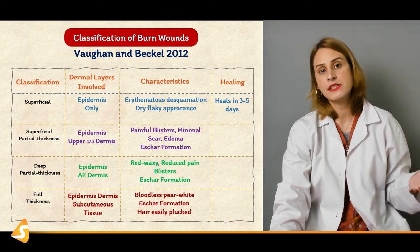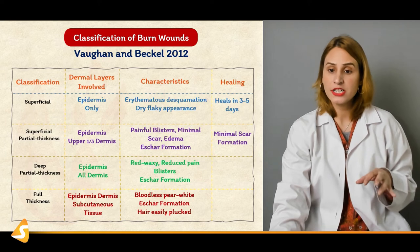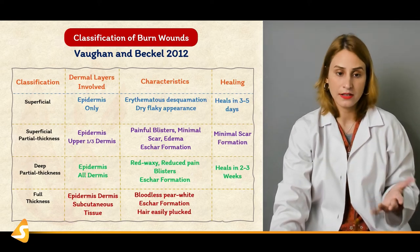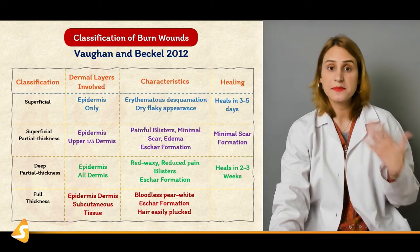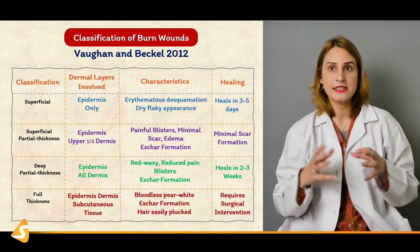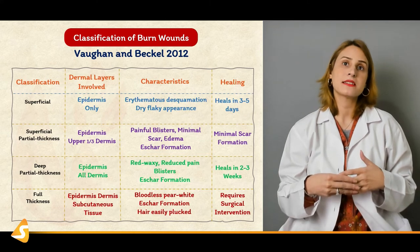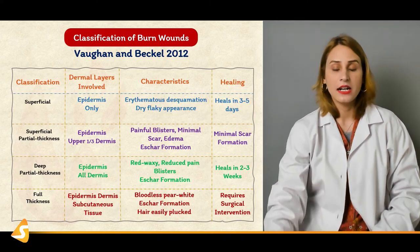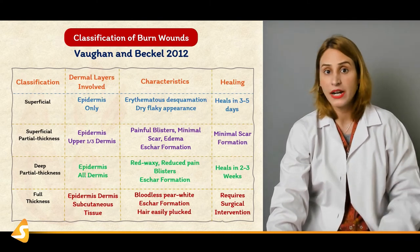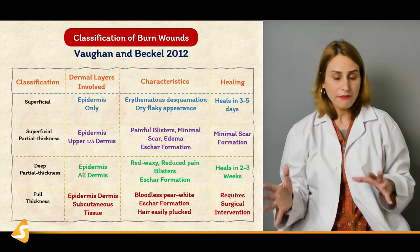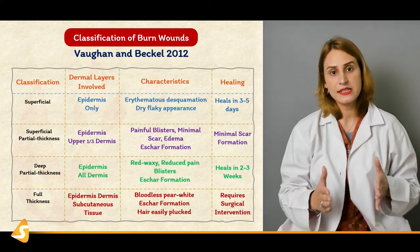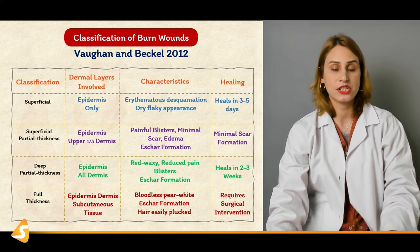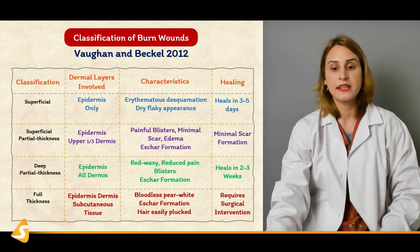Regarding healing: superficial burns usually heal in three to five days. Superficial partial thickness has minimal scar formation. In deep partial thickness, scar formation is definitely more, and the healing process may take two to three weeks. Full thickness burns mostly have eschar formation and healing takes quite a long time — it requires surgical intervention like escharotomy and sometimes grafting. That's how we classify burn wounds, depending upon the dermal layer involved, their characteristics, healing time, blister formation, and scar formation. This is the most widely acceptable classification system used in clinical practice.